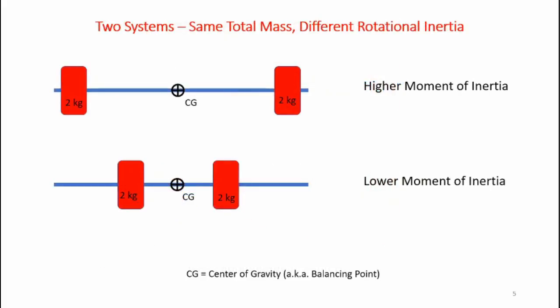Now here I have two systems. These systems have both the same total mass however they have different rotational inertias. The top diagram shows my system where I have two masses at a long distance from the center point and that system has a higher moment of inertia. Now if I move those two masses inward towards the CG the inertia will be less. It'll be more difficult to accelerate the system on the top diagram and a little easier to accelerate the system in the lower diagram due to the lower moment of inertia.